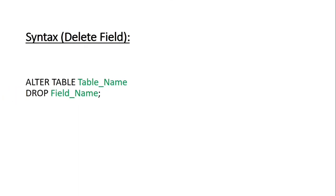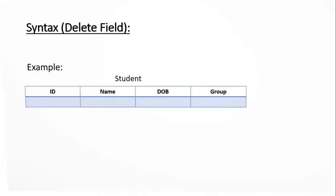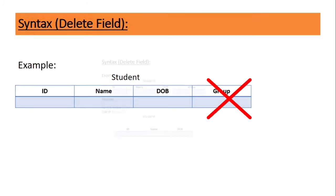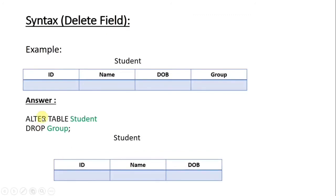Now you can see the syntax to delete a field. You have to write ALTER TABLE, then the table name, then on the next line DROP, then the field name, and a semicolon. That is the syntax. Now let's see an example. You can see the student table with fields: id, name, date of birth, and group. If we want to delete the group field, we write: ALTER TABLE, then 'student' — student is our table name — then DROP, then 'group', then semicolon.